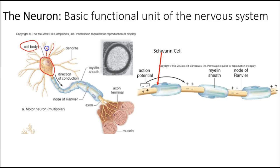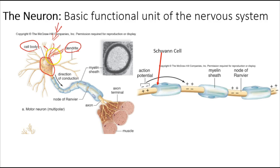The cell body is positioned here, and these small branching extensions from the cell body are called dendrites. Dendrites basically take in information from other neurons. A neuron would be synapsing here and sending that information to this neuron through the dendrites, with information being passed from a neuron upstream to this neuron right here.